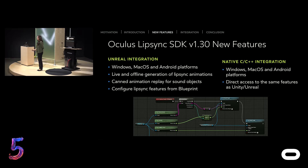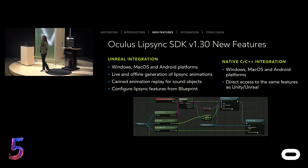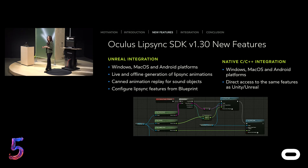Let's take a look at these features in more detail — what's in the Unreal integration and native C/C++. In Unreal, we support it on Windows, Mac OS, and Android platforms. You could do live and offline generation of Lip Sync animations, and you could even do canned animation replay for sound objects. You can configure your Lip Sync features from Blueprint on the same platforms: Windows, Mac OS, and Android. And it also supports the same features as Unity.